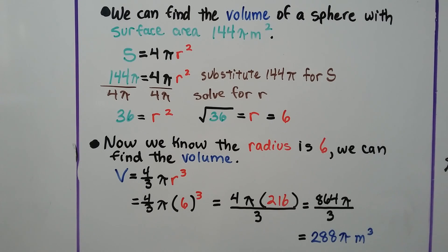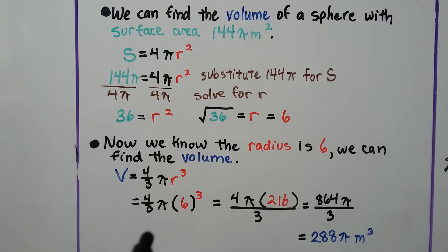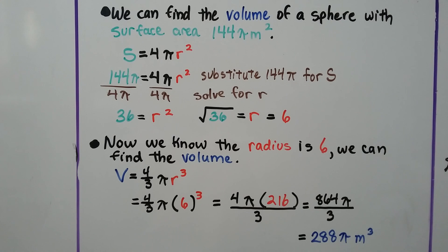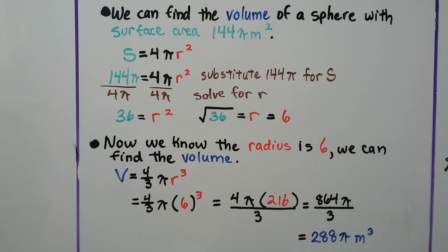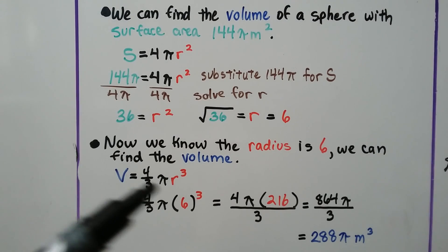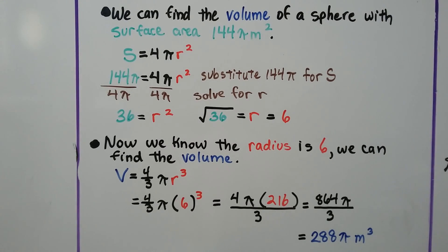Now that we know the radius is 6, we can find the volume. We put 6 into the volume formula: 6 cubed is 216, giving us 4 times pi times 216 over 3. Four times 216 is 864, so we have 864 pi over 3. Dividing gives us 288 pi meters cubed. We were given the surface area, used it to find the radius, then put the radius into the volume formula.